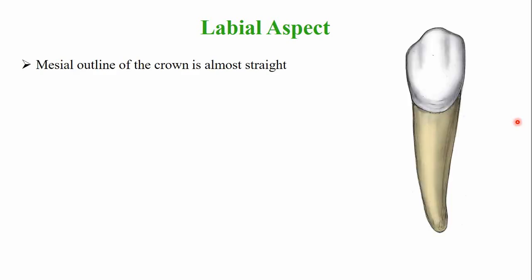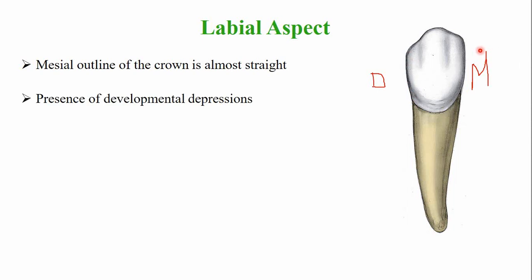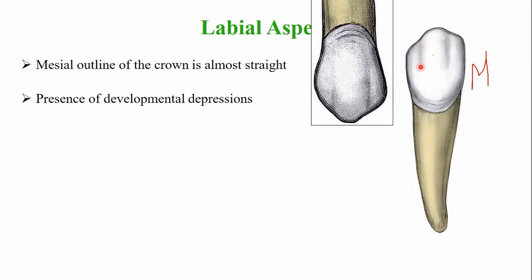The mesial outline of the crown is almost straight and in line with the root surface, while the distal outline is slightly more rounded. On the crown surface, there are two developmental depressions — the mesial and distal developmental depressions — though they are not as prominent as those present in the maxillary canine.